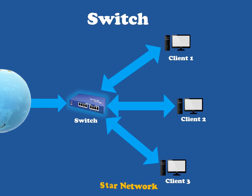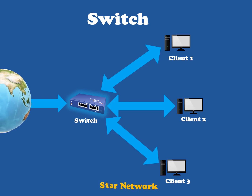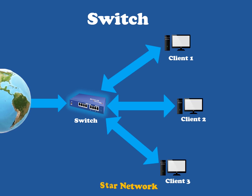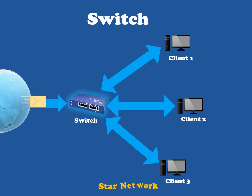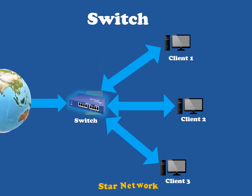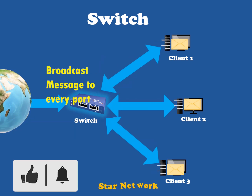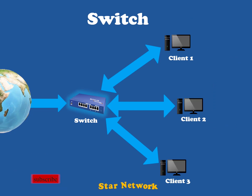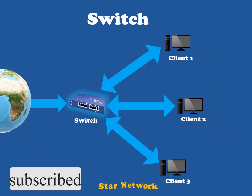A switch does what a hub does, but more efficiently. By paying attention to the traffic flow that comes across it, it learns which clients are associated with which port. At first, a switch knows nothing and simply sends incoming data to each port. But by accepting that initial message, the switch has learned something — it recognizes on which connection the sender of the message is placed.